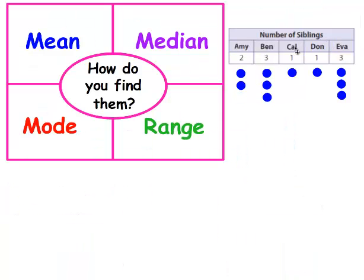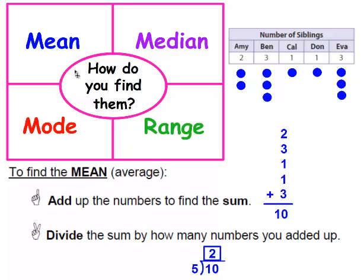Let's look at these again. How do you find the mean? To find the mean, or the average as it's sometimes called, there are two steps. The first one is you add up all the numbers to find the sum. So I added up 2, 3, 1, 1, and 3, and the sum of those numbers is 10. The second step is divide the sum, which is 10, by how many numbers you added up. I added up 5 numbers, so 10 divided by 5 is 2. The mean is 2.